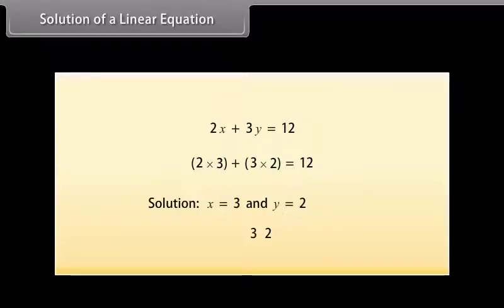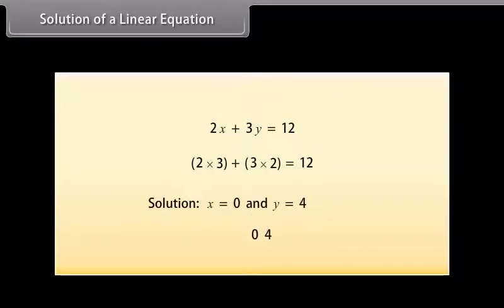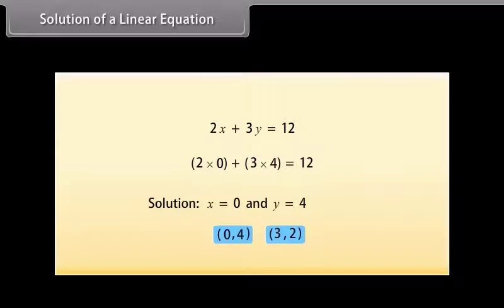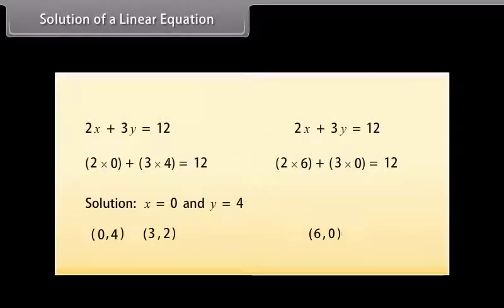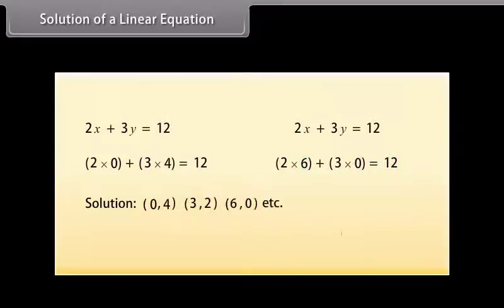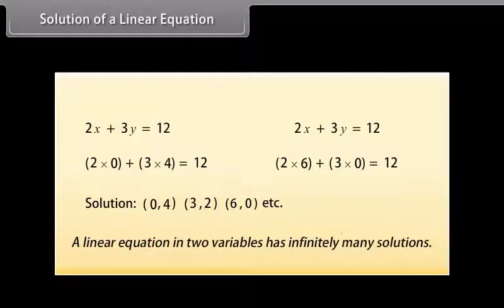We can also write this solution as (3, 2) because the value of X is 3 and the value of Y is 2. Similarly, (0, 4) is also a solution for this equation because when you substitute X is equal to 0 and Y is equal to 4 in the equation, you find that the answer becomes 12. We have found at least two solutions for this equation. Is (6, 0) also a solution? Yes, (6, 0) is also a solution because when you substitute X as 6 and Y as 0, the answer becomes 12. Similarly, many other solutions can be taken from this single equation, and there is no end to different solutions of a linear equation in two variables. Therefore, a linear equation in two variables has infinitely many solutions.